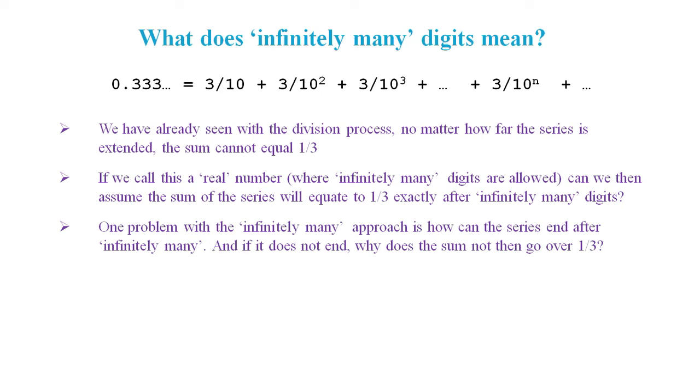One difficulty in understanding the concept of infinitely many is how can the value stop at 1/3 if the series does not end? Is the idea of infinitely many a mistake that ultimately leads to contradictions, or can we just call the things we don't understand paradoxes and move on?